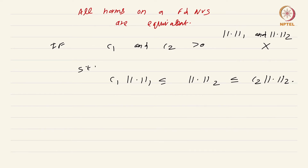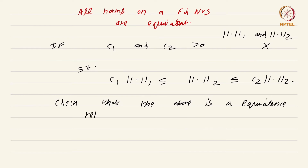First of all, I am going to leave it to you to check that the above is an equivalence relation. If so, look at the collection of all norms on a given vector space — for this part, finite dimensionality is not essential — and put an equivalence relation saying that two norms are equivalent if you can find constants c1 and c2 such that this happens. Show that this is an equivalence relation on the set of norms.